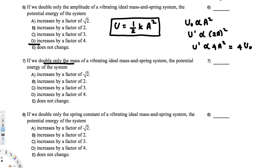Since doubling the mass doesn't appear in the spring PE equation, the potential energy does not change. Now for the third question: if we double only the spring constant of a vibrating ideal mass-and-spring system, what will happen to the potential energy? Using U = ½kA², we can see that U is directly proportional to k.